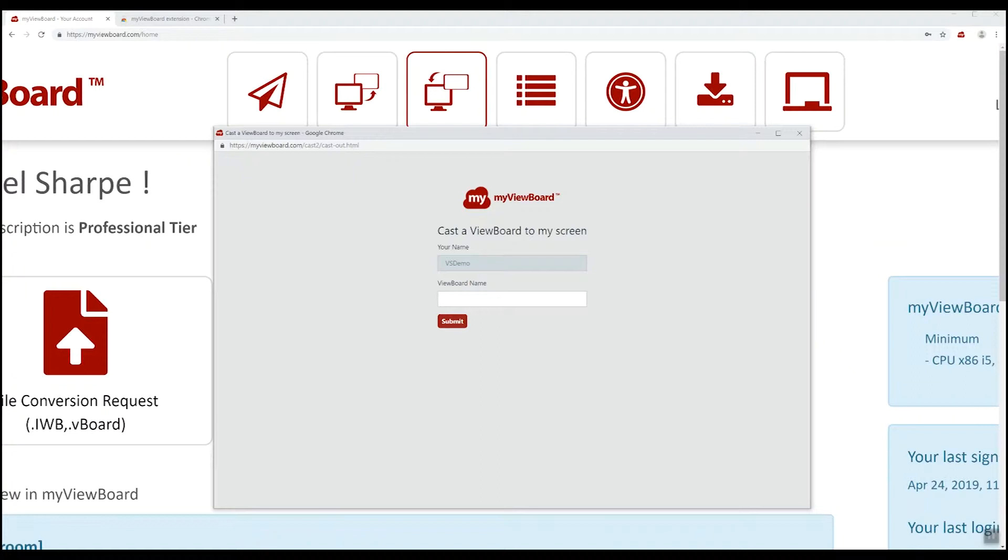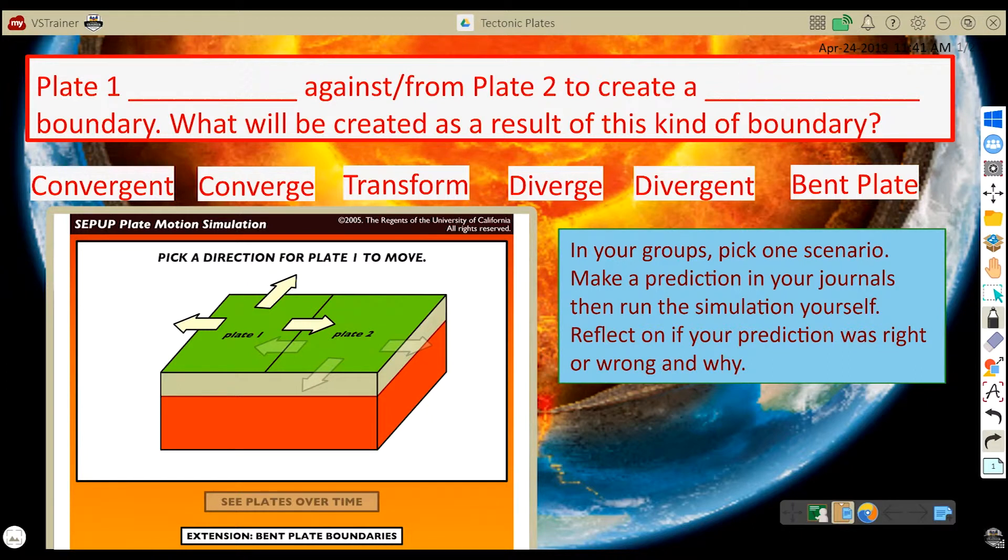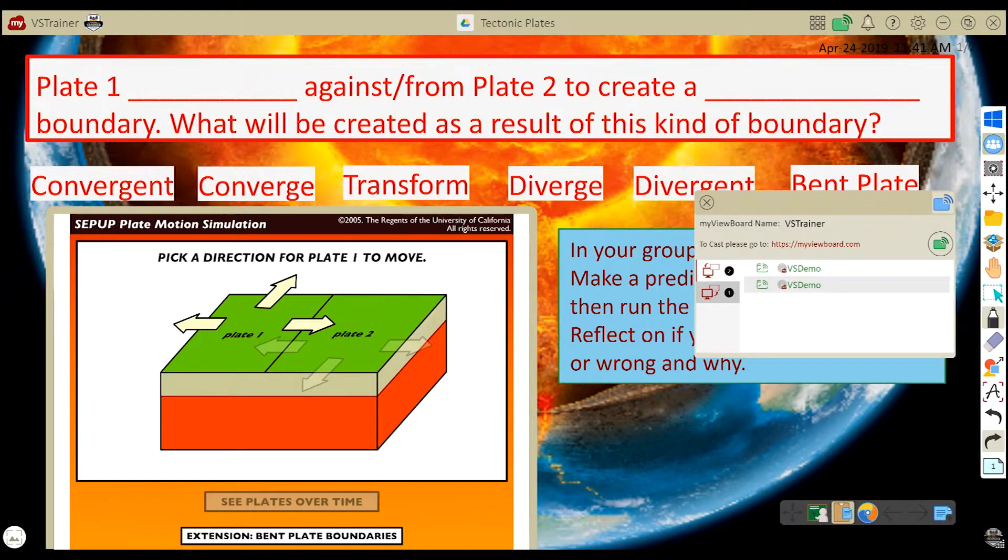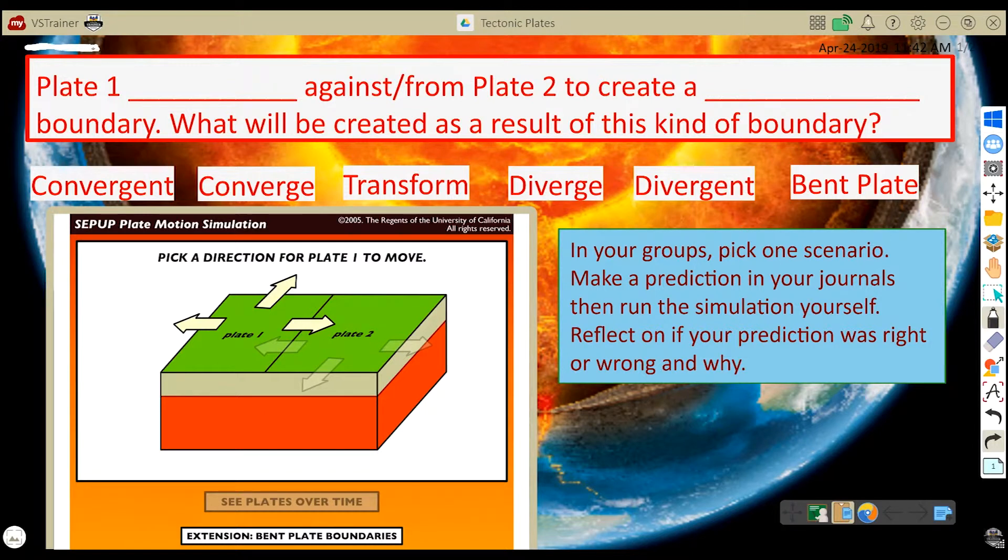All I need to do is type in the viewboard name. If I go back to my program and touch the share icon up here, you can see that the board name is VSTrainer. You can also look in the top left and see that VSTrainer is displayed there. That is the board name.